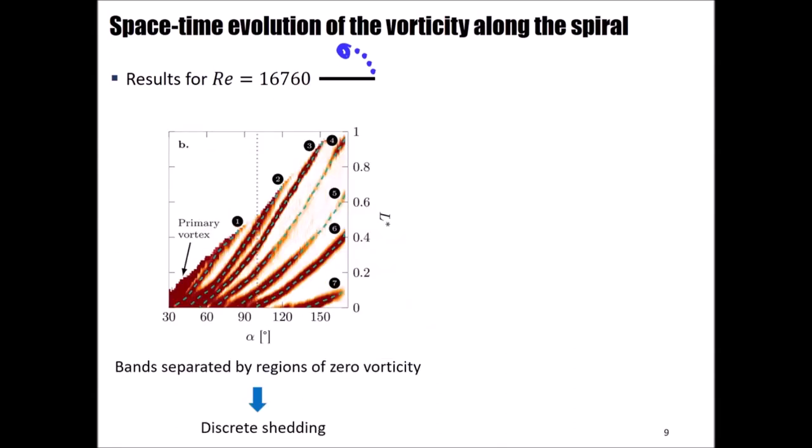Once we computed the spiral for each instant of time, we can retrieve the space-time evolution of the vorticity. As you can see, there are seven bands that correspond to seven shed secondary vortices. On the left side, we can see the trace of the primary vortex, and vortices from number 2 to 6 correspond to the ones highlighted in the previous snapshot, taken at 105 degrees. Non-zero vorticity regions separate each band, and this reinforces the idea that secondary vortices are discretely released from the plate.